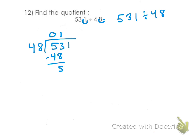What would our next step be? What do we have to do? Bring down the 1. So we now have 51. How many times does 48 go into 51? One time. 1 times 48 is 48. I'm left over with 3.